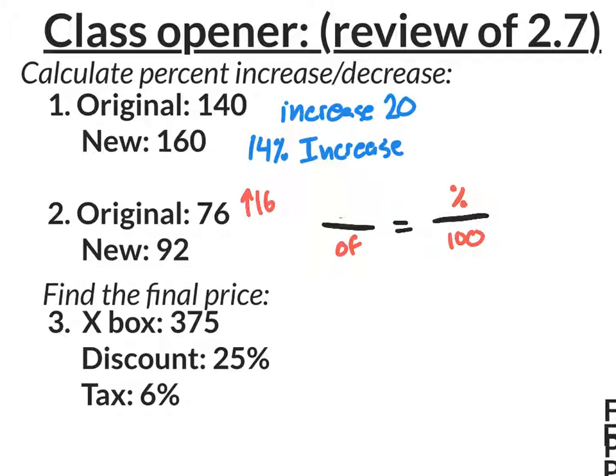So we're going to erase the is and put 16 up there. And of the original amount, which is 76. So let's erase the of and put 76 down there. Equals percent over 100. We want the percent change. So let's put an X in place of the percent. And let's cross multiply.